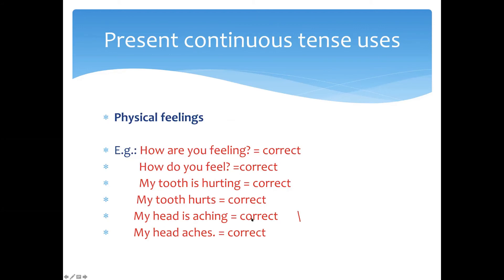We also use present continuous tense when we talk about physical feelings — when we describe the physical feelings of a person. If we ask 'How are you feeling?' we can also use present simple: 'How do you feel?' Both can be correct. With physical feelings, we use both present continuous and present simple: 'My tooth is hurting' or 'My tooth hurts'; 'My head is aching' or 'My head aches.' Both are correct in this situation.